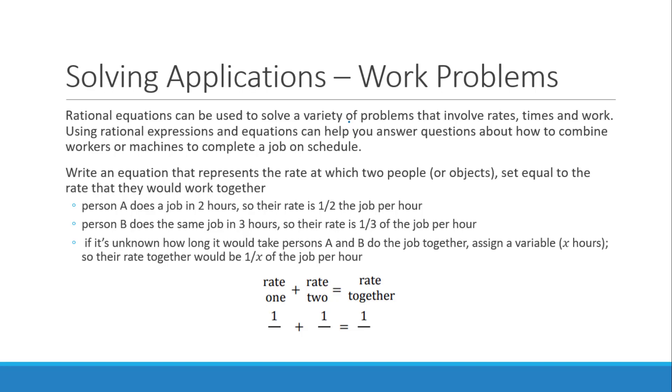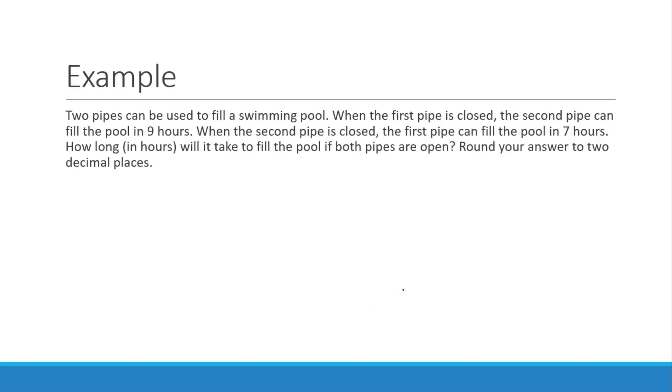Last but not least in this unit, there are a couple application problems that you're going to need to know, one of which is dealing with work. So whenever you have an equation that deals with two objects or two people that are working together, how we write this formula is the rate of the first person written as the rate per hour. So, for example, it says person A does a job in two hours. So that means they do one half of the job per hour. Or person B does a job in three hours, and their rate is one third of the job per hour. And so typically what we do is we take these two people, we add them together to figure out what is the rate of them working together to do the job. So let's look at an example.